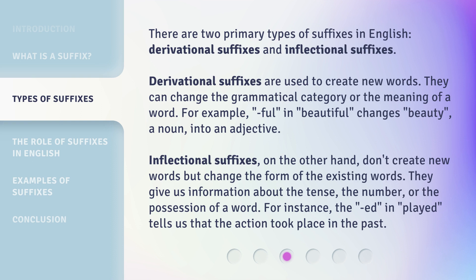There are two primary types of suffixes in English: derivational suffixes and inflectional suffixes. Derivational suffixes are used to create new words — they can change the grammatical category or the meaning of a word. For example, -ful in 'beautiful' changes 'beauty', a noun, into an adjective.